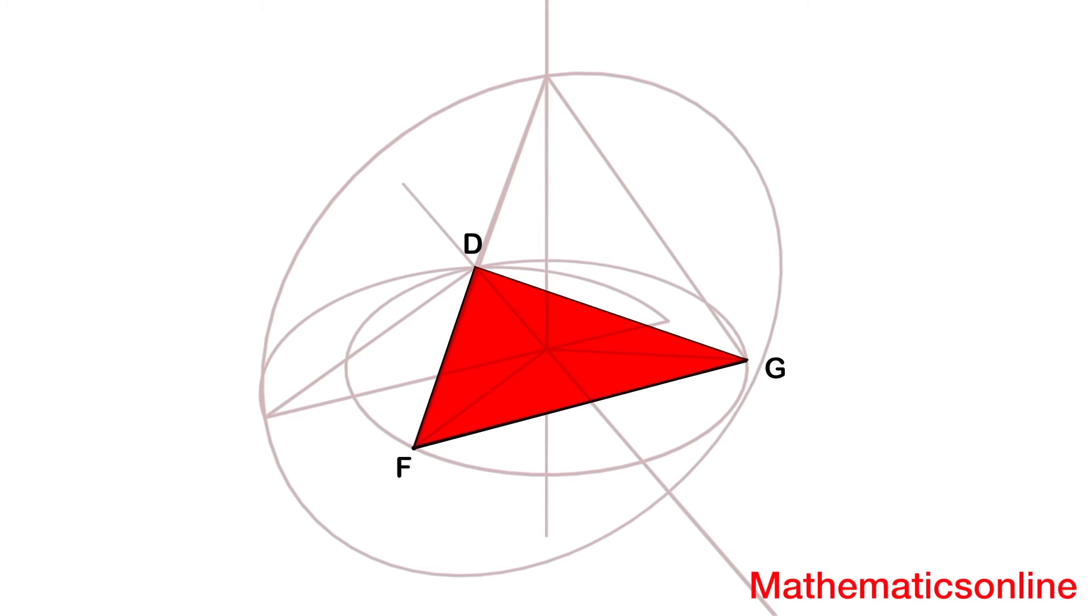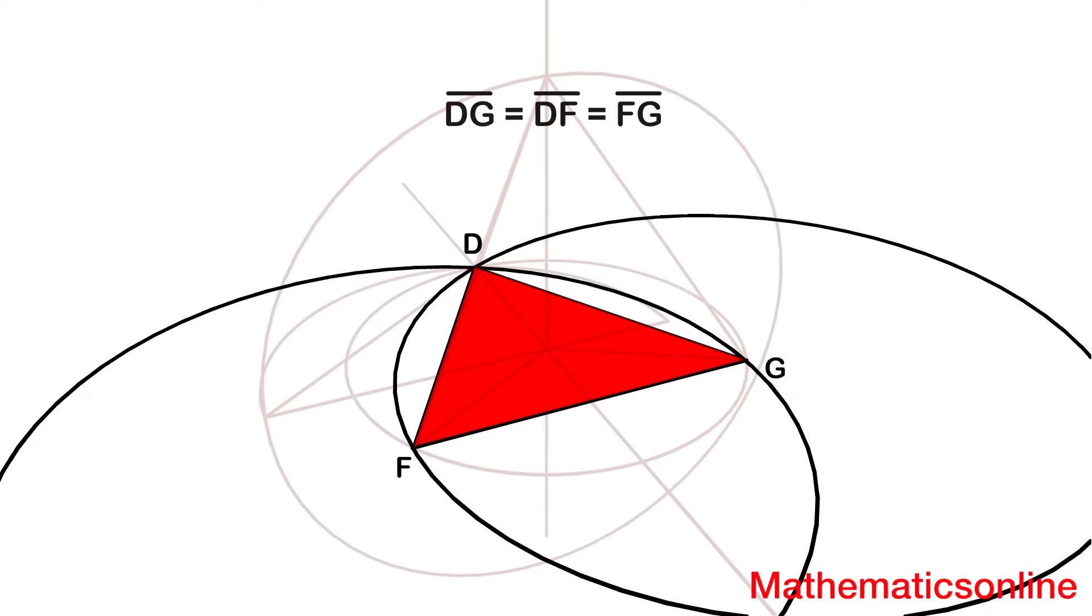So with the construction completed, let me point out that triangle DFG is equilateral. So this means that all sides of the triangle are equal lengths.